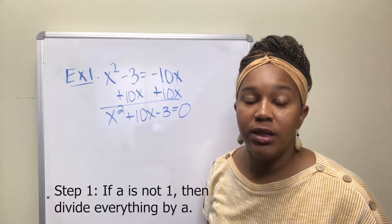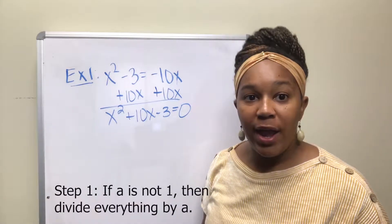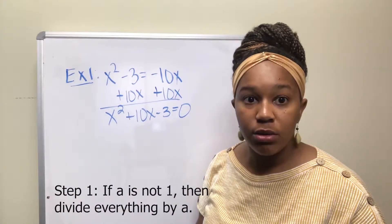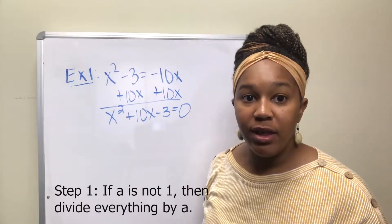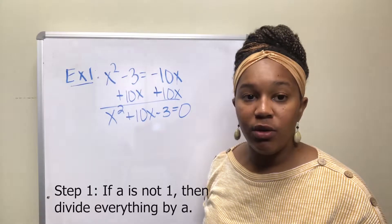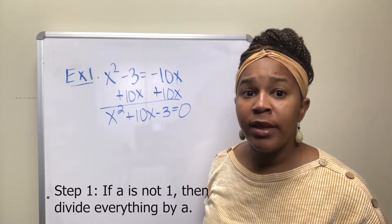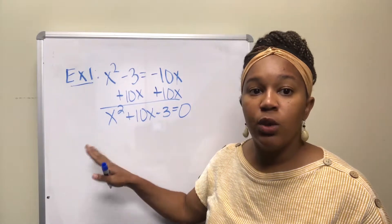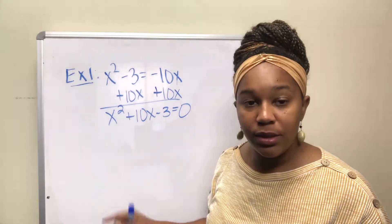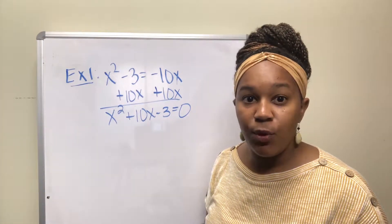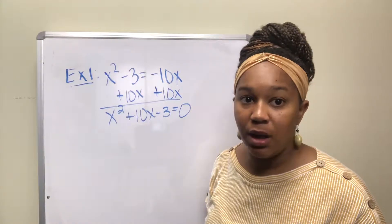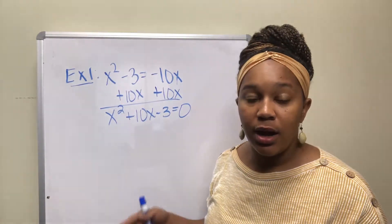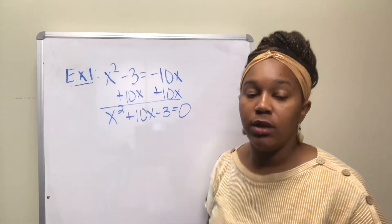Now it's in the form of a quadratic equation. Step one is: if your a — your leading coefficient — is not one, then you have to divide everything by that leading coefficient. In this example, our leading coefficient is one, so we can actually skip step one.